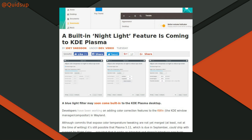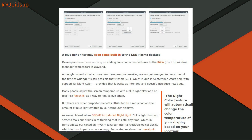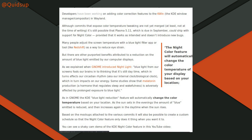Another article from OMG Ubuntu: a built-in Night Light feature is coming to KDE Plasma. This feature already exists in the GNOME desktop, and we can now expect to see the same sort of feature within Plasma and KWin — this will be Plasma 5.11, which is due in September. Night Light changes the colour temperature output on the monitor. As explained when GNOME introduced night light, blue light from our screens fools our brains into thinking it's still daytime, which in turn affects our circadian rhythm — also known as our internal clock — which in turn impacts our energy.